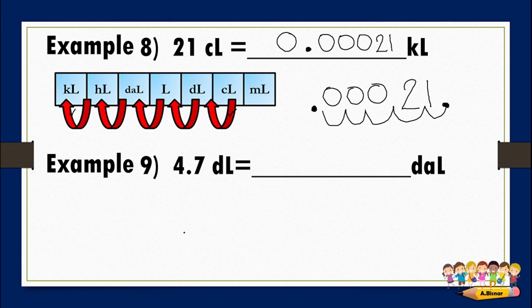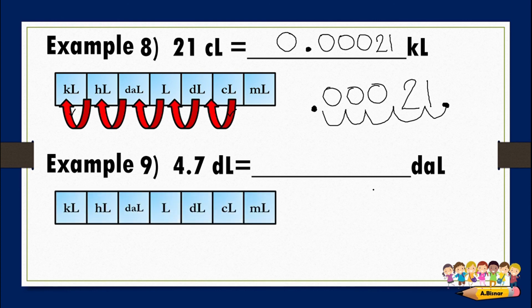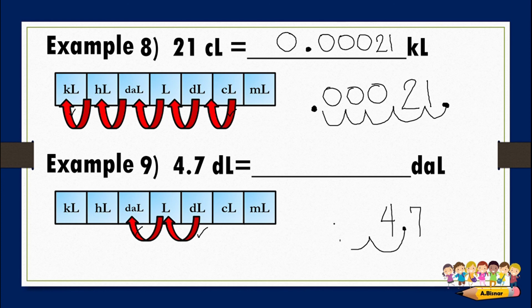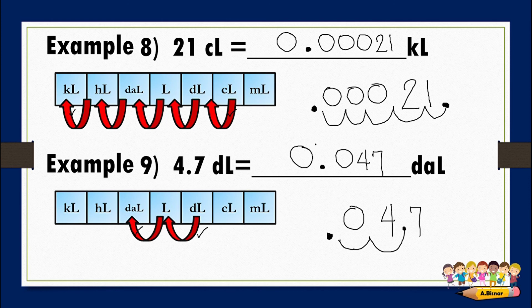For the last one, number nine: convert 4.7 deciliters to decaliters. We write the given: 4.7. From deciliters to decaliters there are two steps to the left. We move the decimal point two places to the left: one, two. We write 0.047 — and since a decimal number must not start with a decimal point, we add a leading zero. The answer is 0.047. That's it — I hope you learned. Thank you.